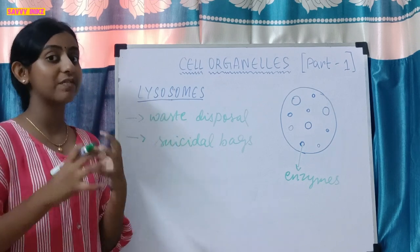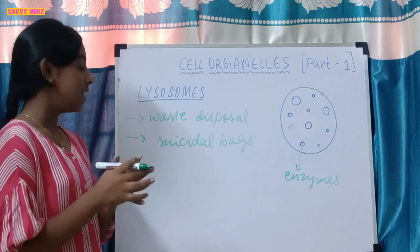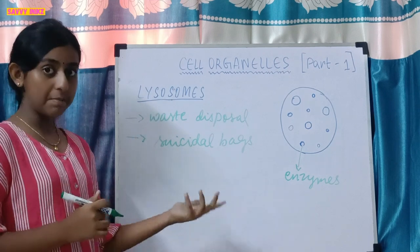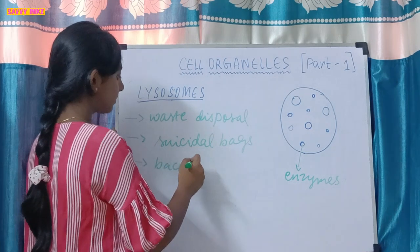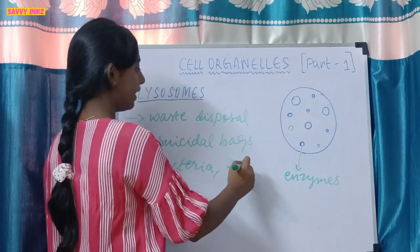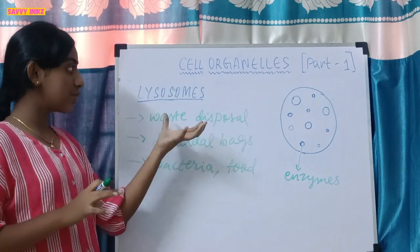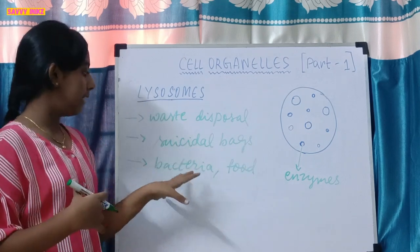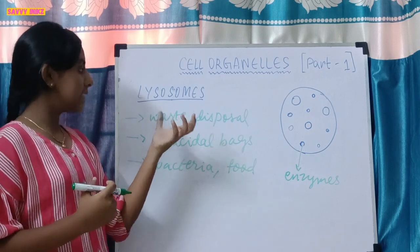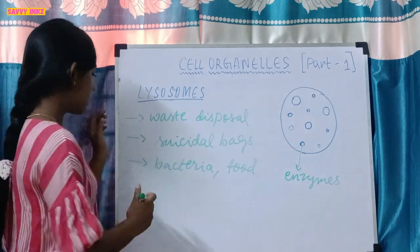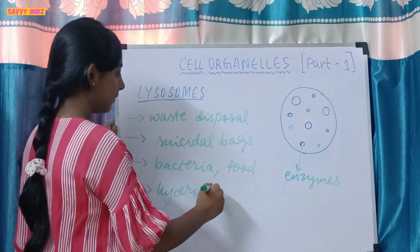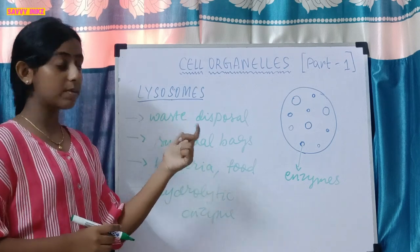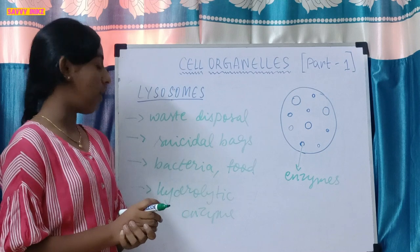The main function of lysosomes is releasing their enzymes to digest cellular components. If any foreign particles enter the cell — like bacteria or food particles — they are sent to the lysosomes. The lysosomes, due to their enzymes, digest these and convert them into simpler substances. Lysosomes have many enzymes, and one of the most important is hydrolytic enzymes, which are the main enzymes used for digesting cellular components.